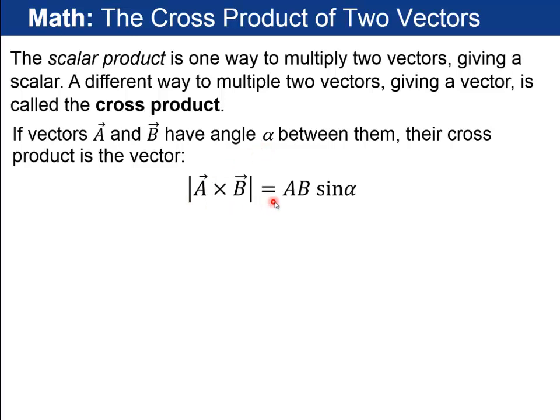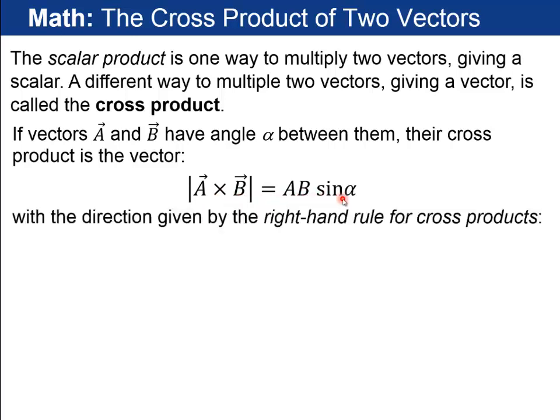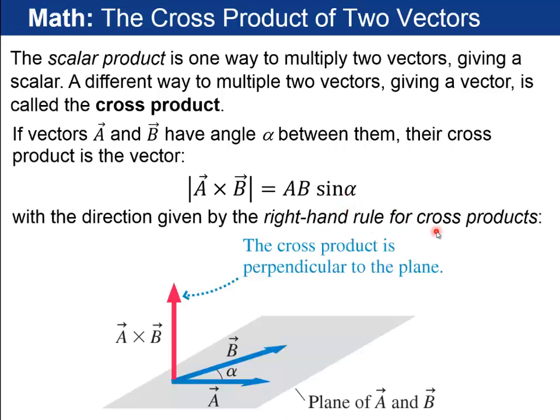The magnitude of A cross B is A times B times sine of the angle between them. And the direction of the resulting vector, you use what's called a right-hand rule for cross products. So if A is going to the right, and B is going up, then the cross product is perpendicular to the plane formed by vectors A and B. And then the length of this vector is proportional to the sine of this angle. So if the two vectors are parallel, cross product is zero. And if the two vectors are perpendicular, then that's when the cross product is going to be maximum.